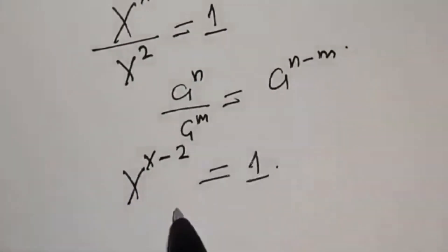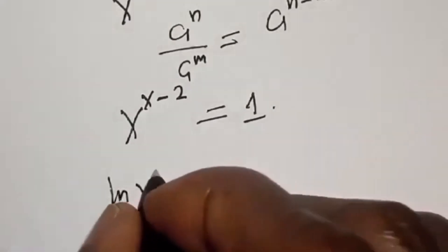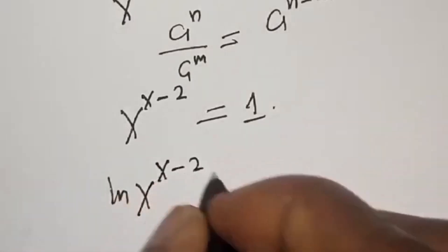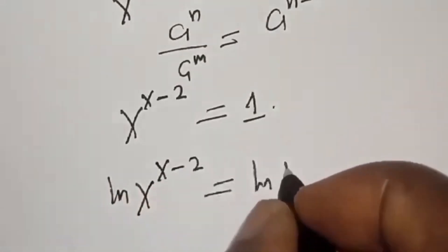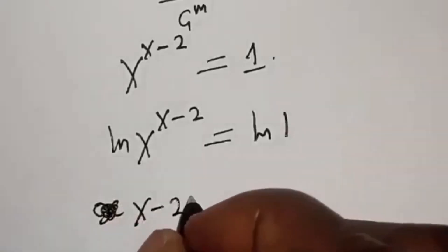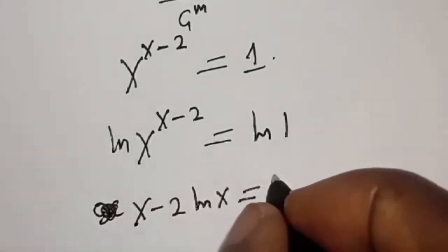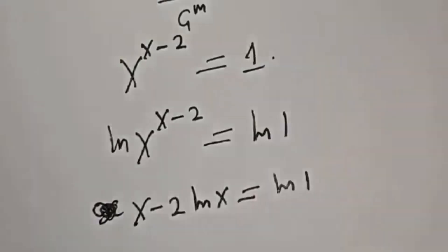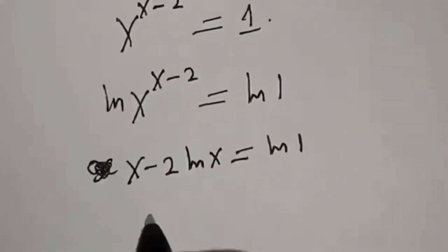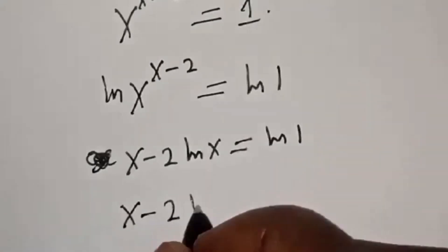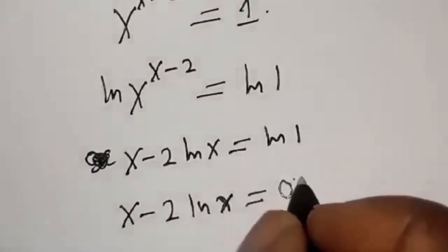Let's take the natural log of both sides. The natural log of s raised to power s minus 2 equals the natural log of 1. Bringing down the exponent, we get s minus 2 times the natural log of s equals the natural log of 1, which is 0. So s minus 2 times natural log of s equals 0.